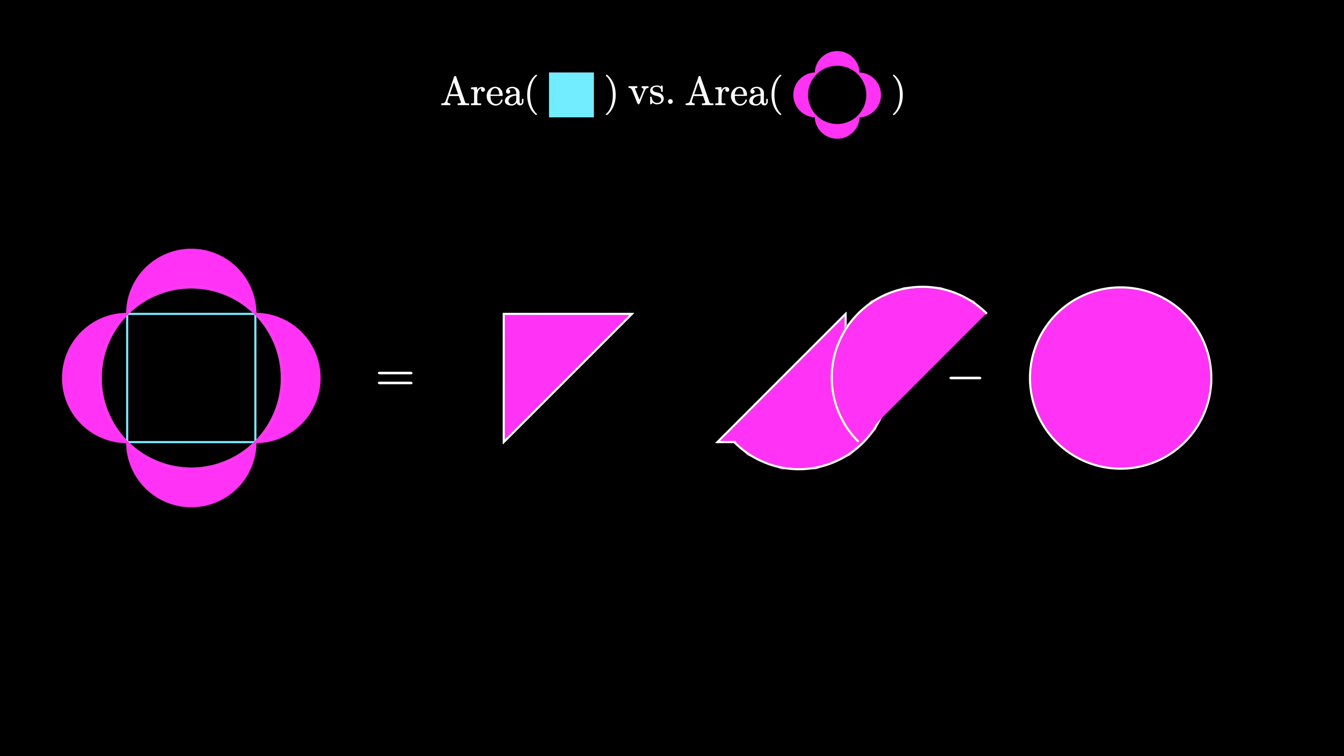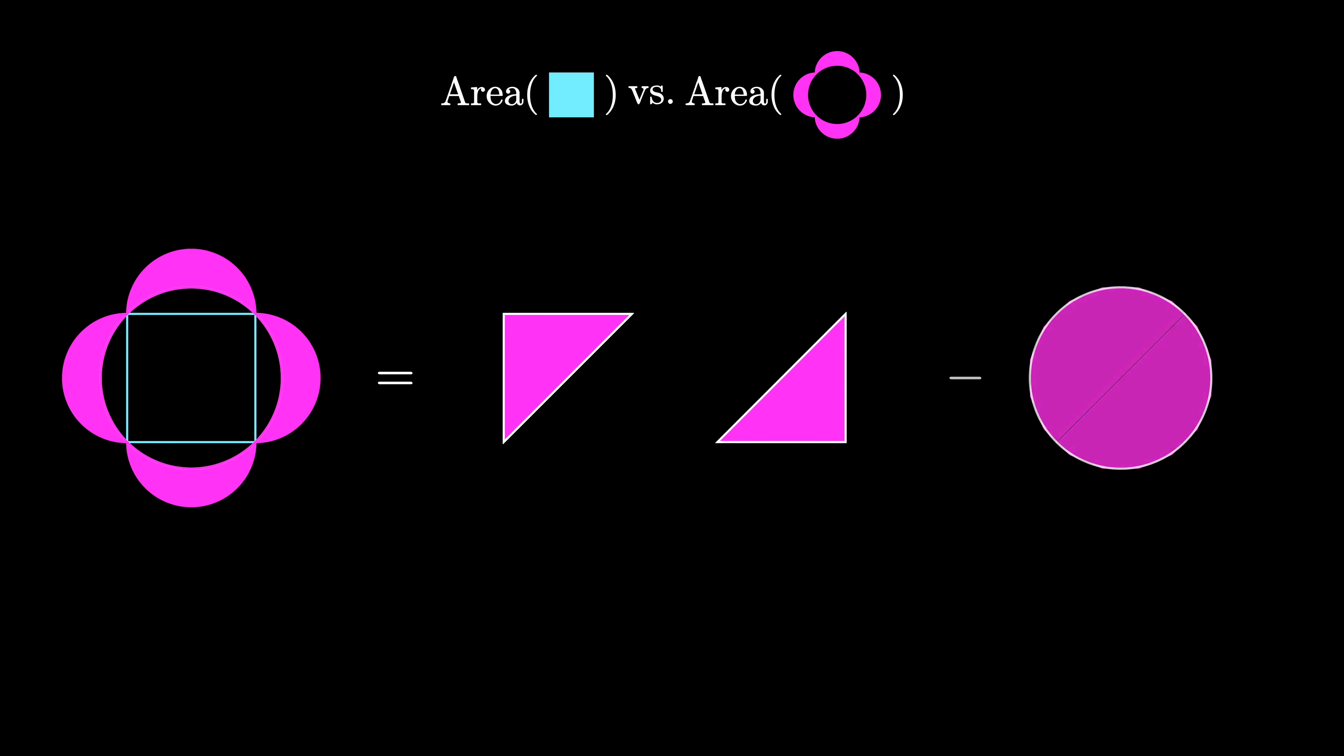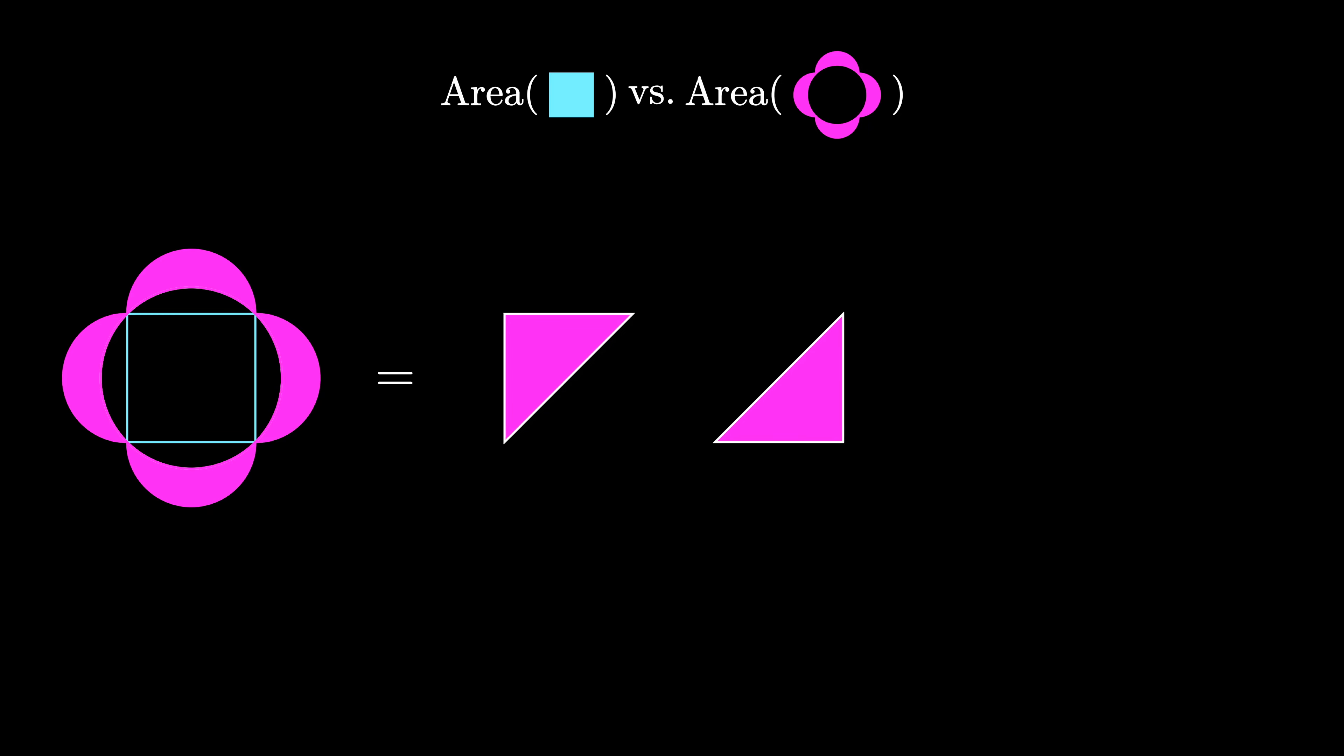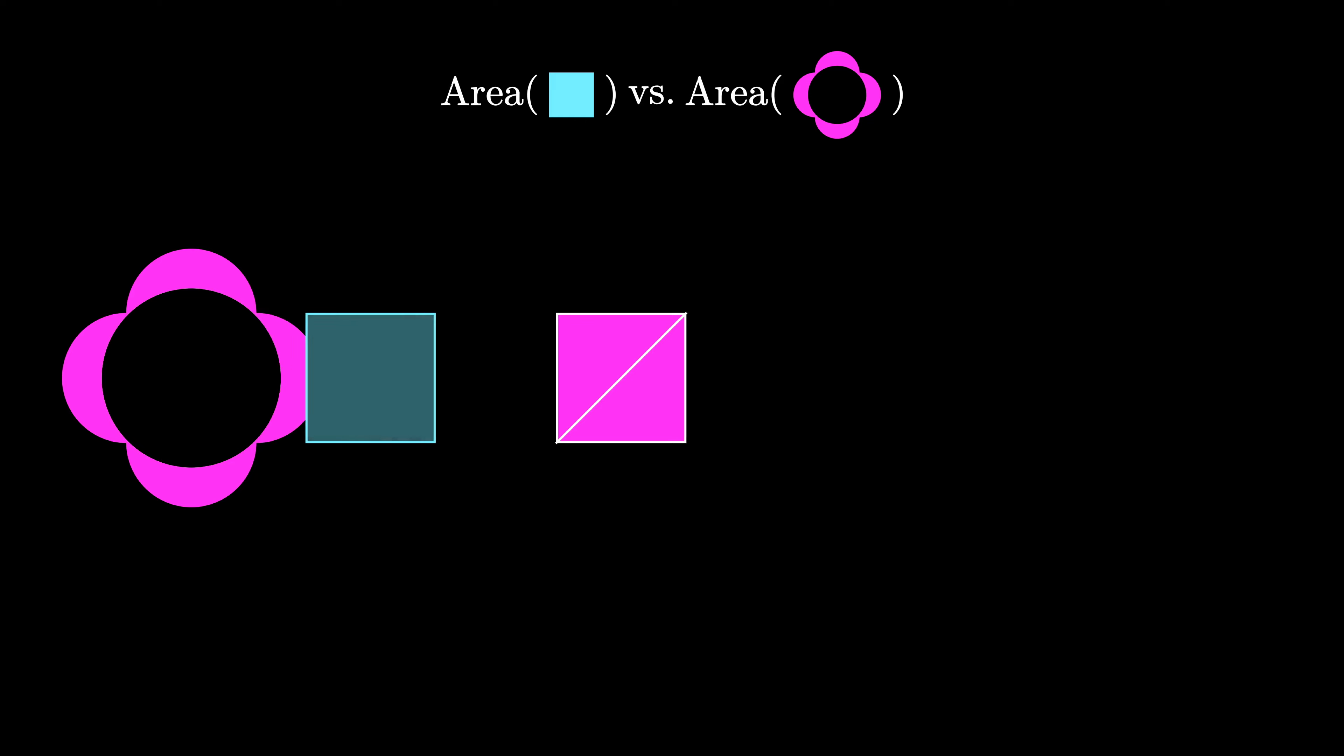But the diameters of both these semicircles match the diameter of the original circle and so those areas cancel out, thus leaving us just with the two triangles which together form the original square.